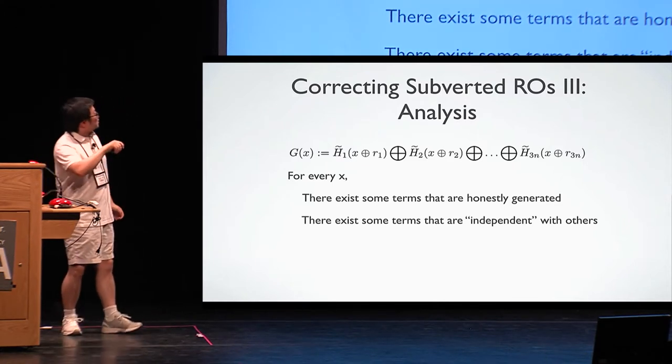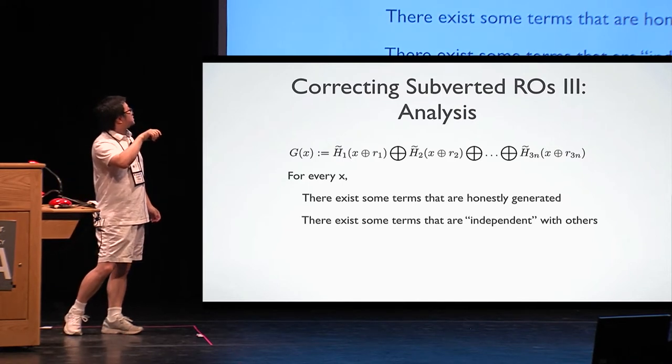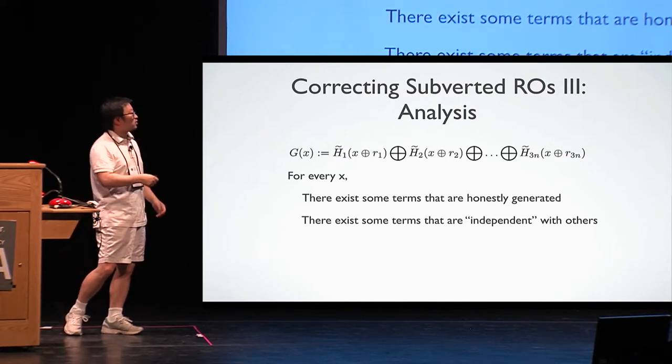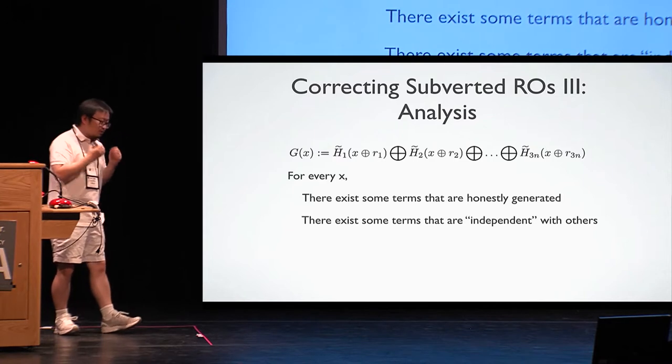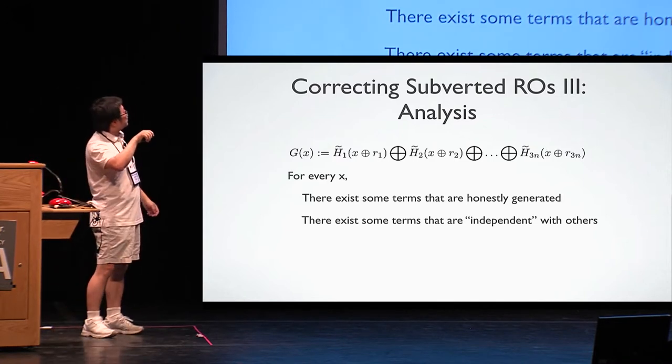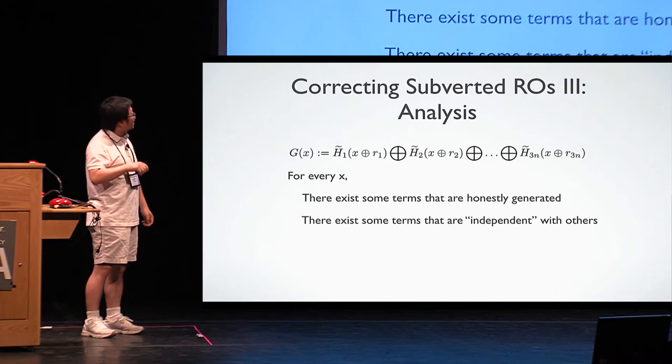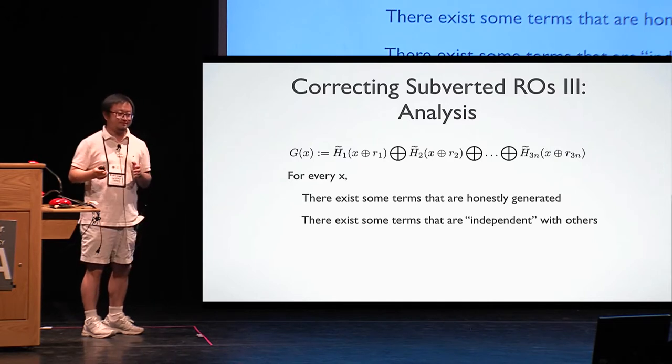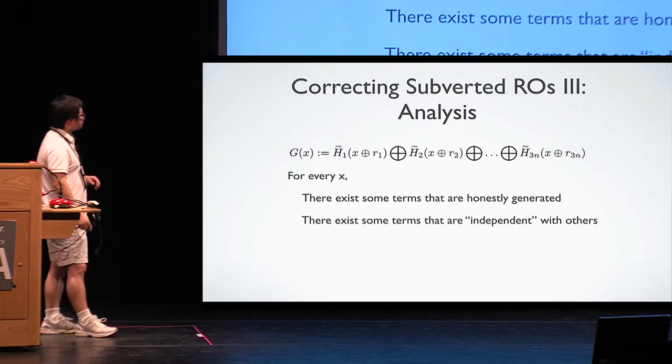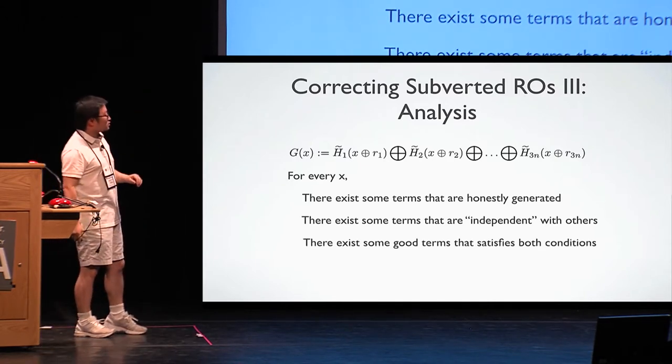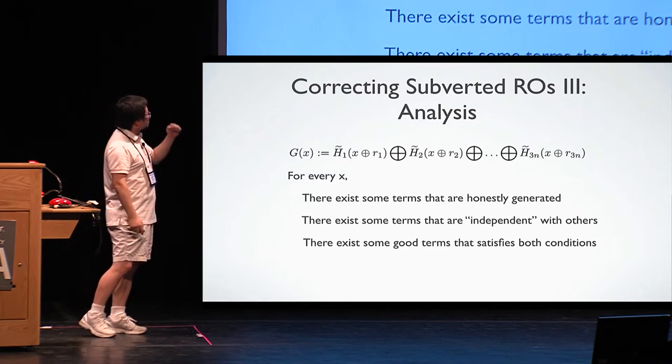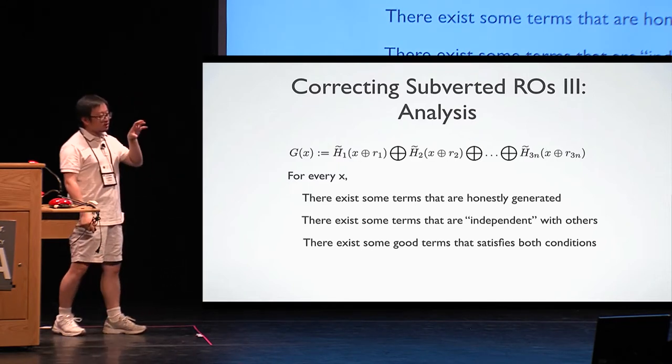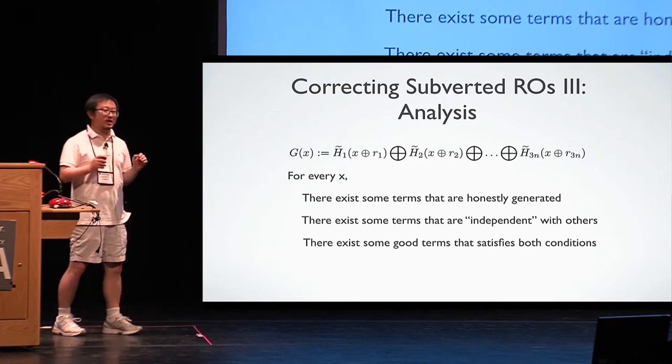So by independent here, I mean the value over here is not influenced by any other term at all. Or to put it more concretely, when you evaluate the particular input at this point, it's never queried by the random oracles when evaluating at any other points. That's what we want to prove. If we have both properties, then we try to ensure there is a good term that satisfies both. Then we're going to be happy.